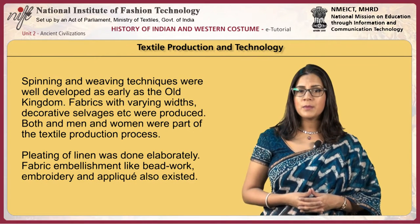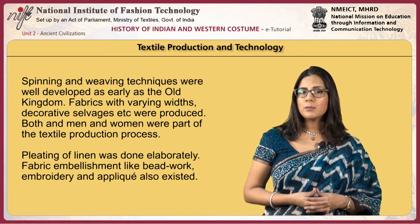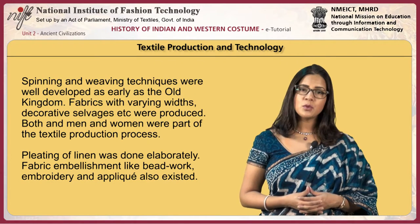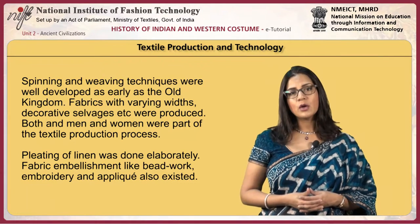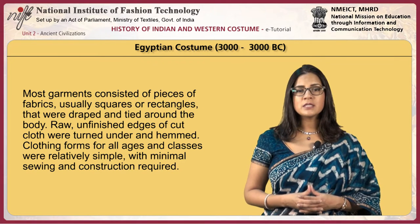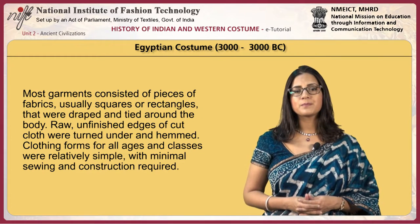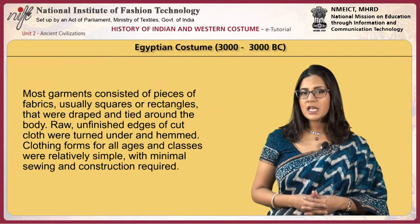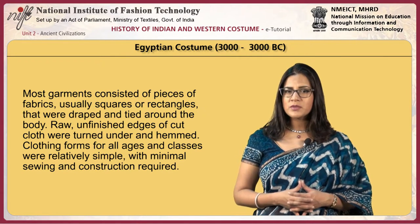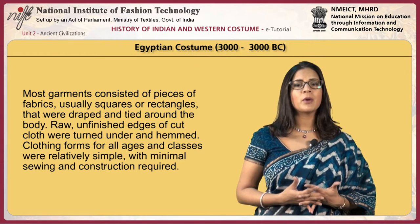Both men and women were part of the textile production process. Pleating of linen was done elaborately. Fabric embellishments like beadwork, embroidery and applique also existed. Most garments consisted of pieces of fabric — usually squares or rectangles — that were draped and tied around the body. Raw unfinished edges of cut cloth were turned under and hemmed. Clothing forms for all ages and classes were relatively simple, with minimal sewing and construction required.